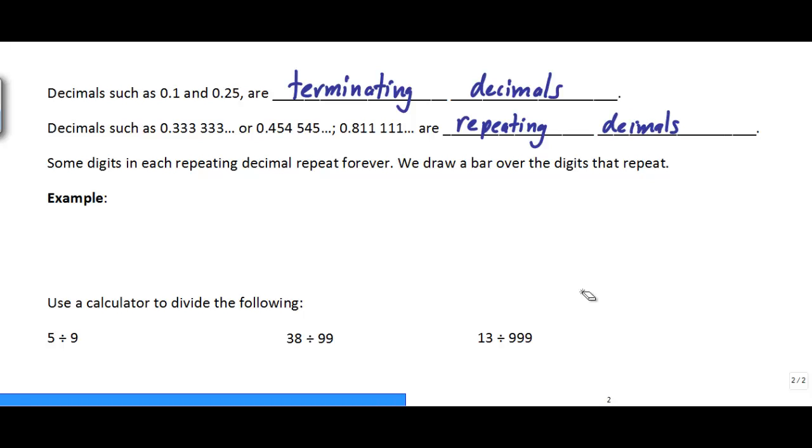And some of these decimals just repeat forever. So in order to show that they repeat forever, we draw a bar over the digits that repeat. So for example, 0.33 repeater, we can draw 0.3 with a bar just over top of the 3. And 0.454545 would be 0.45 with a bar over the 4 and the 5. And 8111 would be 0.81 with a bar just over top of the 1, not the 8 because it doesn't repeat.